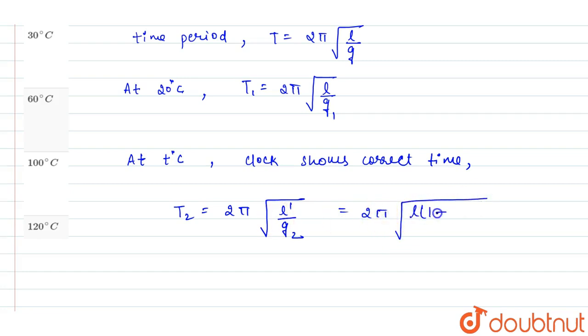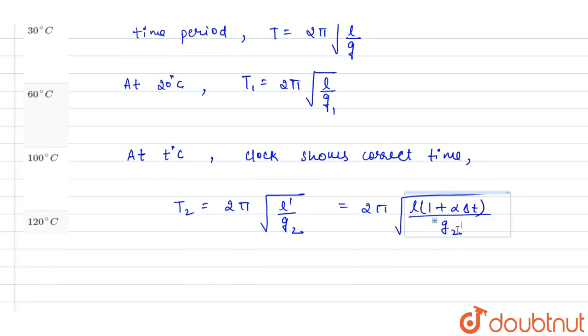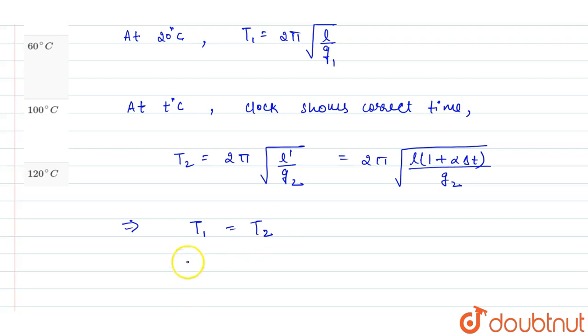Since the clock needs to show the correct time at this temperature, we can write that these two should be equal. l by g1 equals l by g2, which means the time shown at 20 degrees Celsius should be shown at temperature T. This implies that T1 will equal T2, and we can write that l by g1 equals l times 1 plus alpha into delta T divided by g2.